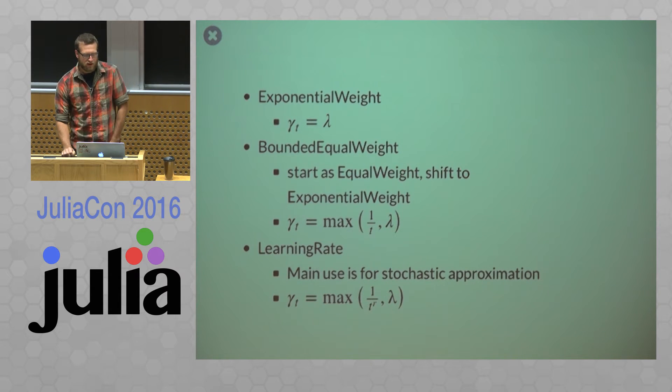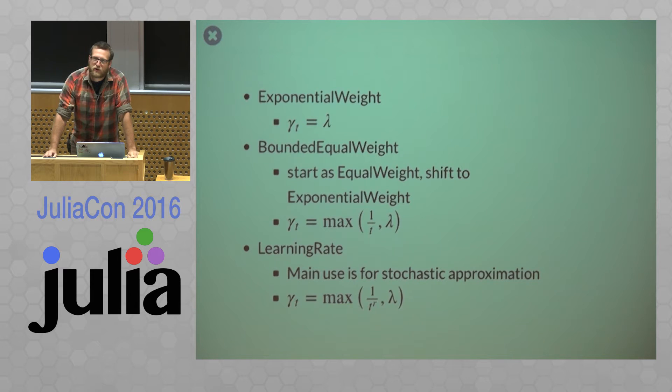Other types available are exponential weight. So this is where we're using a constant. So this is where we want to weight more recent observations have a higher influence. So we use a constant and we're able to update things. So we're able to kind of catch up on a model that's changing over time. There's a bounded equal weight. So there we start as an equal weight and then we shift to exponential. So our gamma is the maximum of 1 over t or some constant lambda.